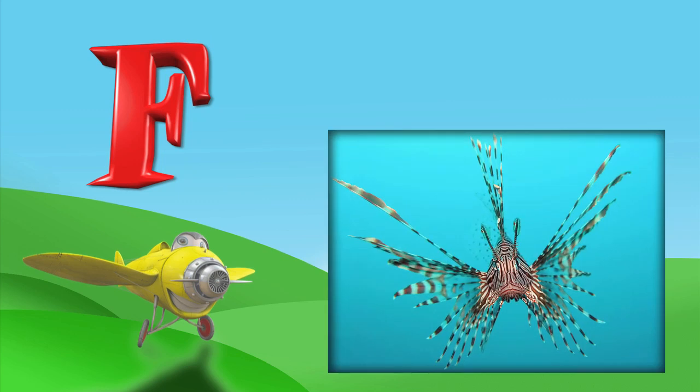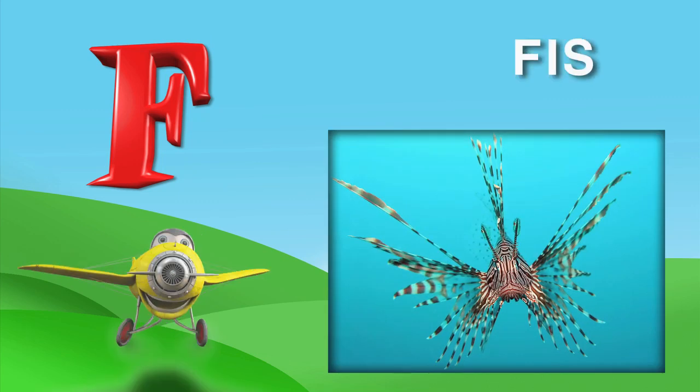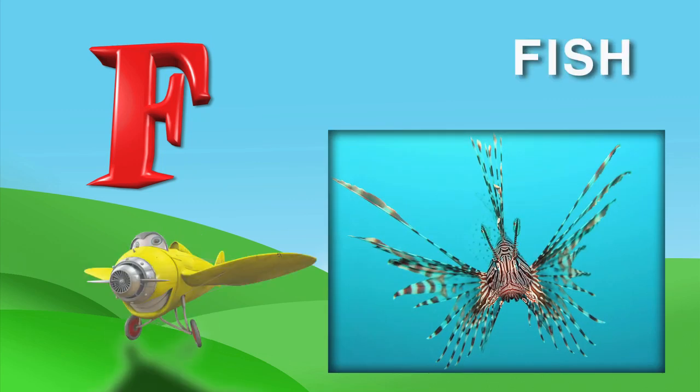F is for fish. F-I-S-H. Fish swim in the water and they come in all types of neat colors and shapes.